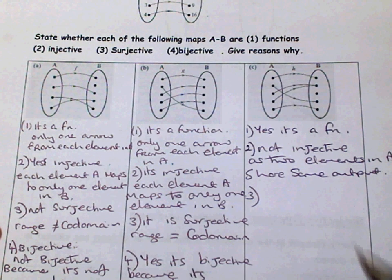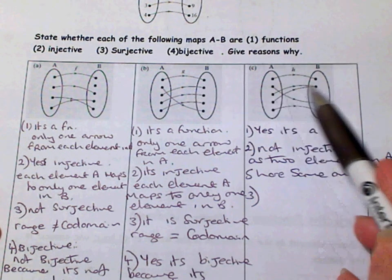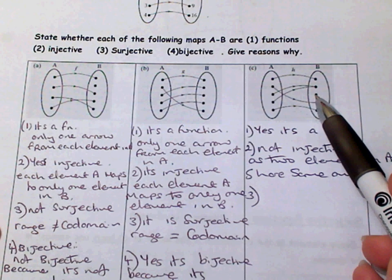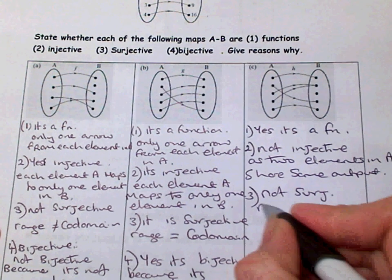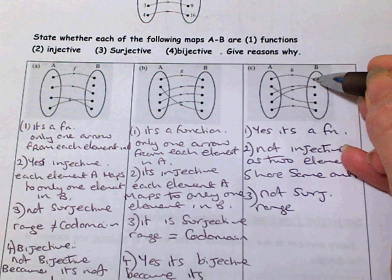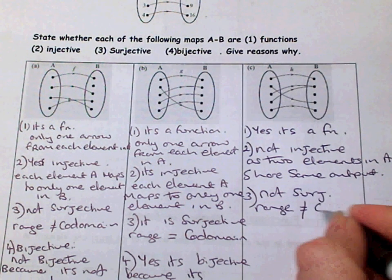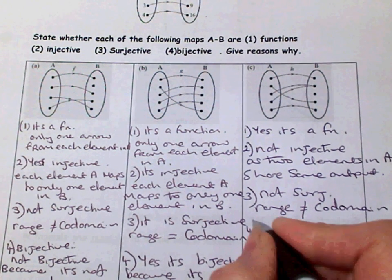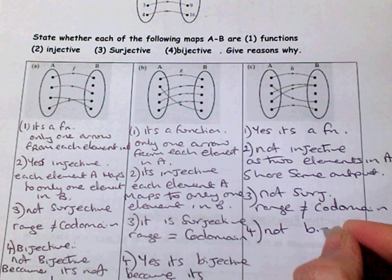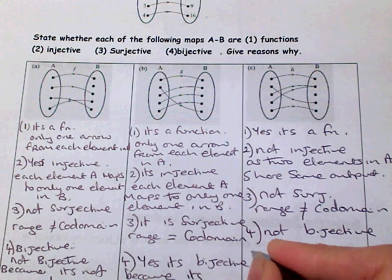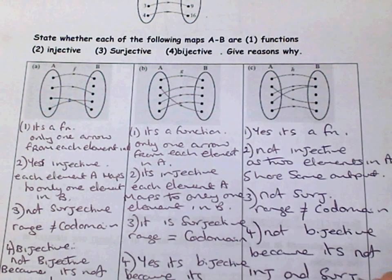Number three: is it surjective? Looking at the function, it's not surjective because the range — this one, this one, this one, and this one — is not equal to the co-domain because one of the elements isn't used. So it's not equal to the co-domain. And number four: is it bijective? It can't be bijective, so it's not bijective because it's not injective and surjective.